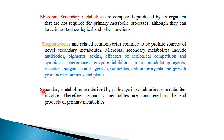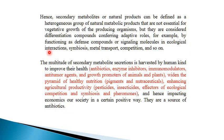These secondary metabolites are derived by pathways in which primary metabolites are involved; therefore, secondary metabolites are considered as end products of primary metabolism. Secondary metabolites or natural products can be defined as a heterogeneous group of natural metabolic products that are not essential for vegetative growth of the producing organism, but are considered differentiation compounds conferring adaptive roles — for example, by functioning as defense compounds or signaling molecules in ecological interactions, symbiosis, metal transport, and competition.